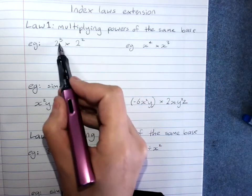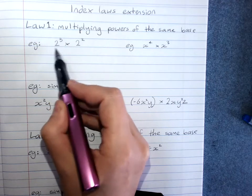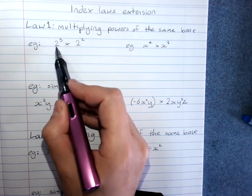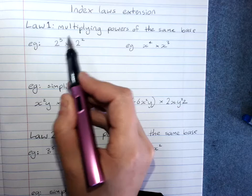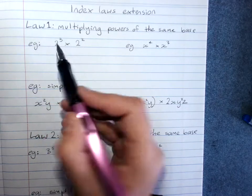The base of a power is the number that is being multiplied in this power. So 2 to the power of 3 means 2 times 2 times 2. The base number is 2. The power or the exponent is this small number here.